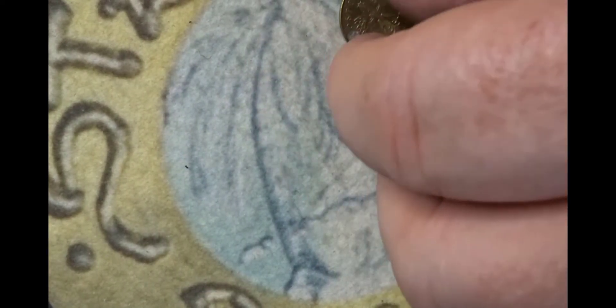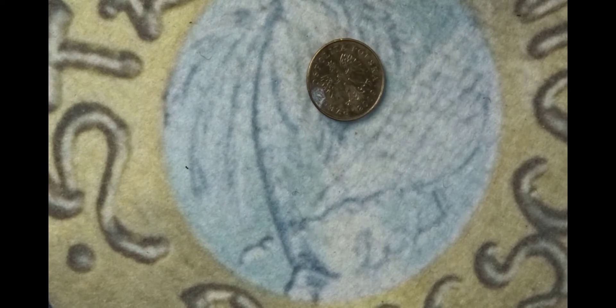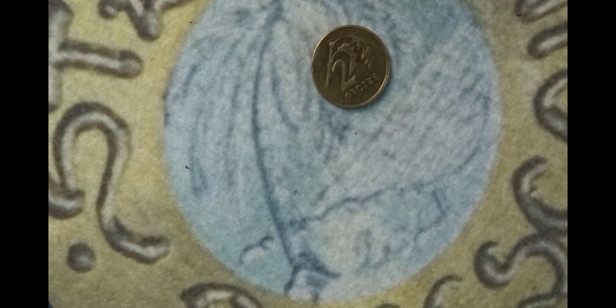Next coin is a crowned eagle on this side, and you have on the back two Groszy which shows the two oak leaves.